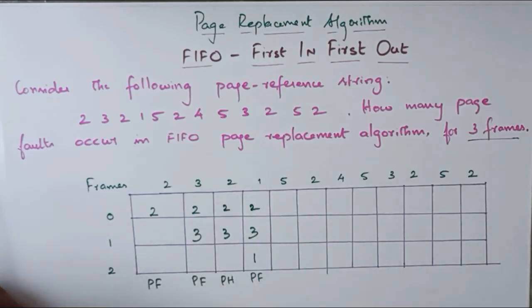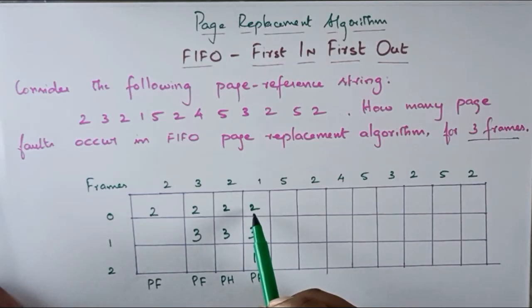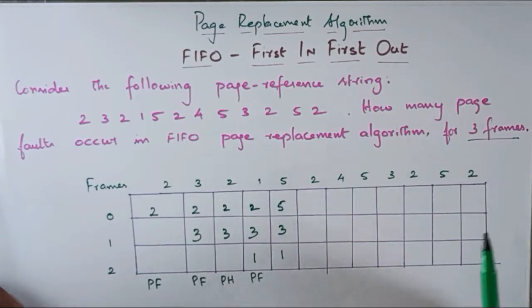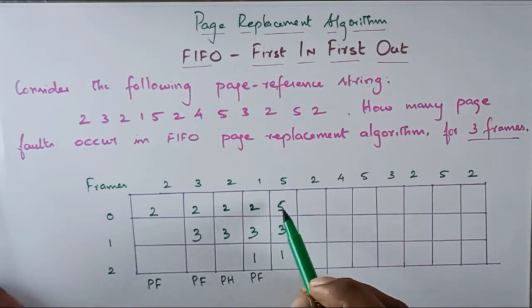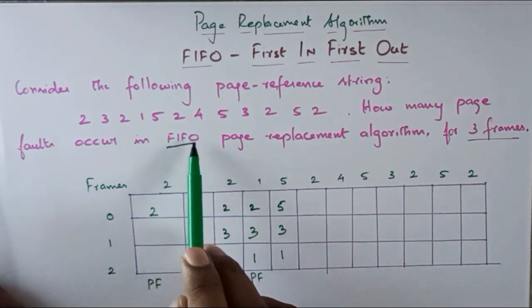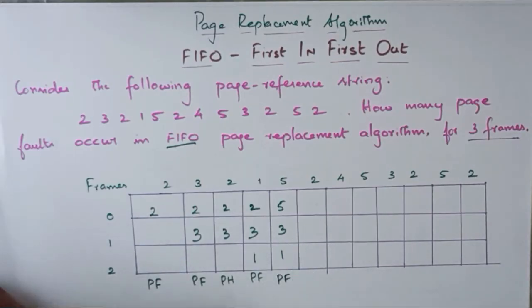Now how can I replace the page? We have 2, 3, 1, and next page is 5. 2, 3, 1 — 2 is the first page inserted. So first insert 2, I will replace it with 5. Now it becomes 5, 3, 1. This is the page replacement algorithm — page 2 is replaced with 5. First in, first out page replacement. This is the page fault.